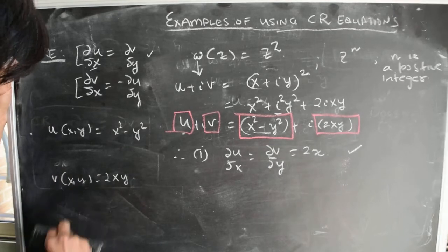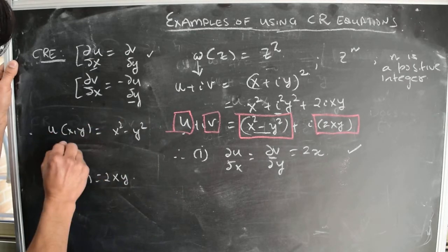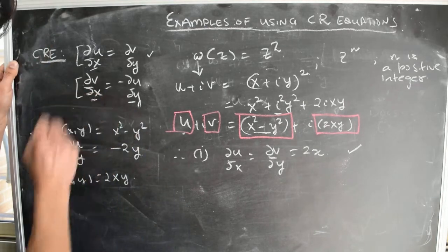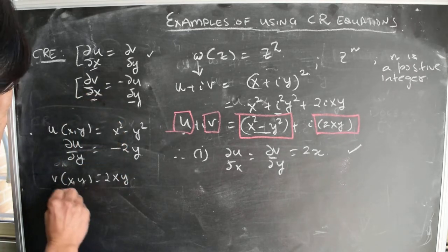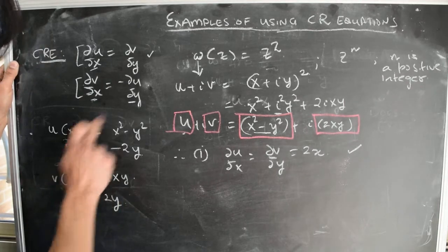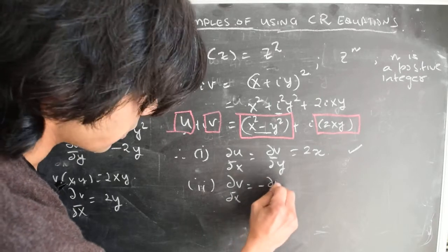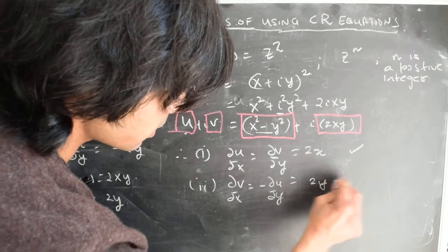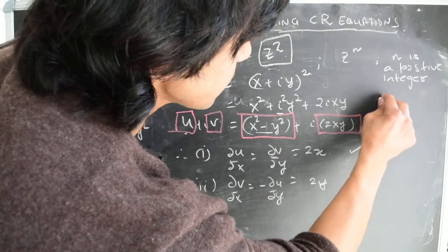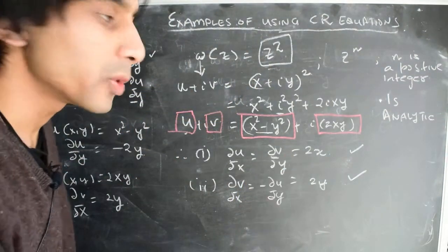Now we need to check the second Cauchy-Riemann condition. Since U = x²-y², ∂U/∂Y = -2Y. And ∂V/∂X is also 2Y. Therefore, ∂V/∂X equals minus ∂U/∂Y — the second condition requires that ∂V/∂X = -∂U/∂Y, which equals 2Y in this case. This condition is also satisfied. So the function W(z)=z² is analytic, because it satisfies both Cauchy-Riemann conditions.